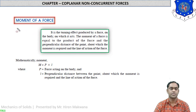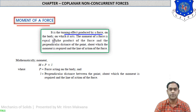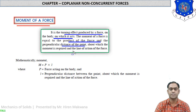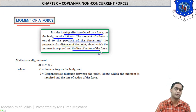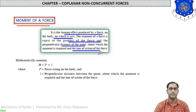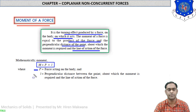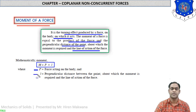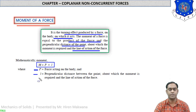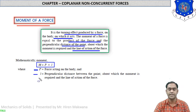What is the moment of a force? It is the turning effect produced by a force on the body on which it acts. The moment of a force is equal to the product of the force and the perpendicular distance of the point about which the moment is required and the line of action of the force. Mathematically, moment M is equal to P into L, where P is the force acting on the body and L is the perpendicular distance.